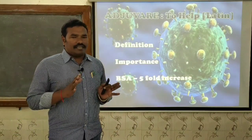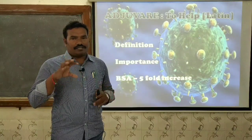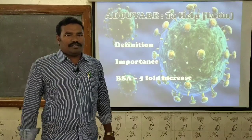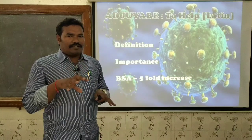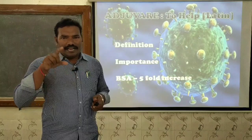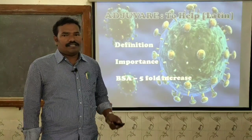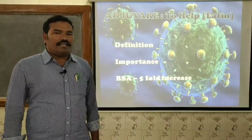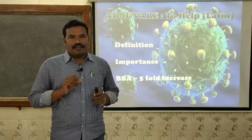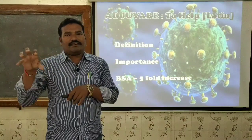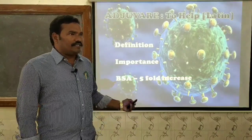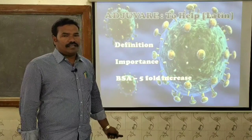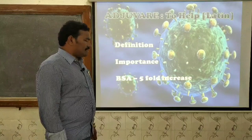Whenever we introduce a particular antigen into an individual, it elicits a particular degree of immunogenicity or immune response. If the same antigen is introduced along with an adjuvant, it helps in enhancing the degree of that immune response. An adjuvant is a substance which, when mixed with the antigen, enhances the elicitation of the immune response.